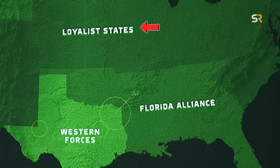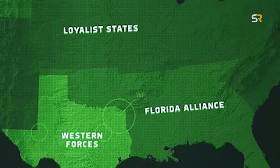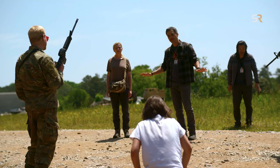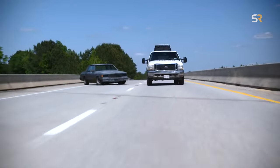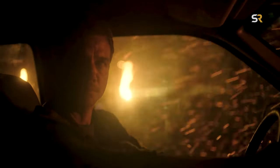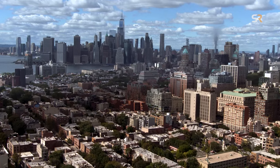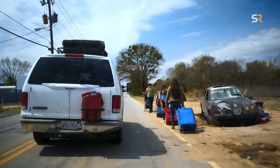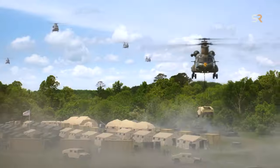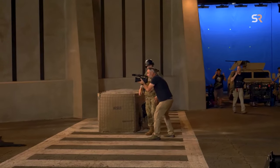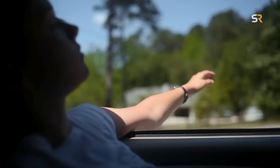The loyalist states appear to be those who are aligned with the federal government, while every other faction is seemingly against what the U.S. has become. Since these three other separatist groups don't seem to be allied with each other, they all may want to instill leadership over the U.S. in their own way. Since positive reviews for Civil War praise its themes and the questions its story posits, the movie no doubt delves deep into why the U.S. is divided into so many different sides.